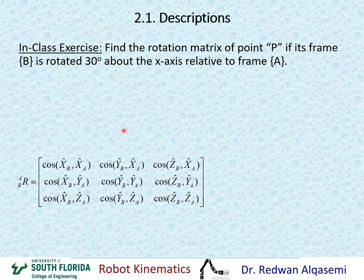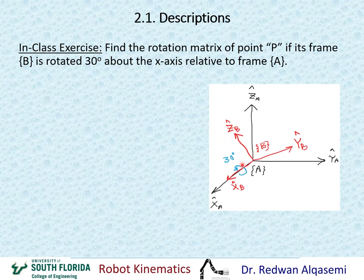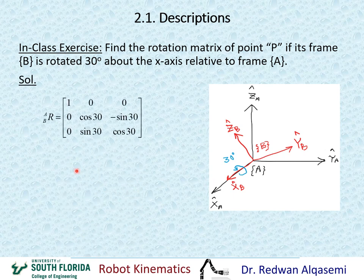For rotation about the X-axis: XB and XA are the same axis. By the right-hand rule with the thumb along the X-axis, YB and ZB rotate 30 degrees relative to frame A. The rotation matrix R of B relative to A equals: first row/column [1, 0, 0], and the remaining 2×2 block is [cos30, −sin30 / sin30, cos30].